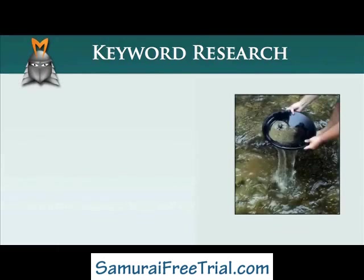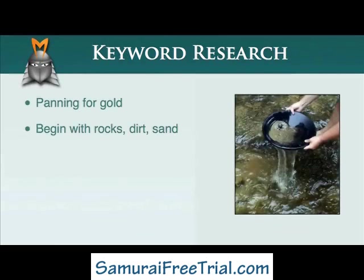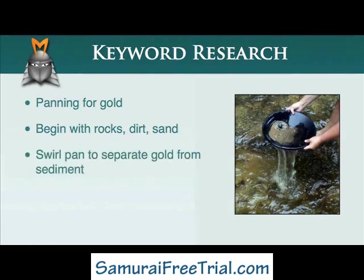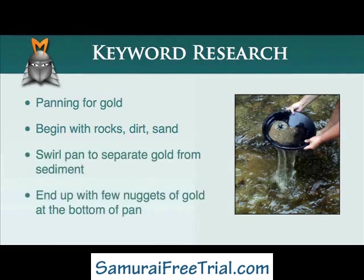A great way to understand the process of keyword research is to compare it with the process of panning for gold. In the days of the gold rush, prospectors would take their gold pans down to a river and scoop up a collection of rocks, dirt and sand. Initially, they'd discard the large rocks that were clearly not relevant, and then they'd swirl their pan to separate out the heavy gold from the lighter sediment. At the end of this filtering process, they'd hopefully be left with a few nuggets of gold at the bottom of their pan.